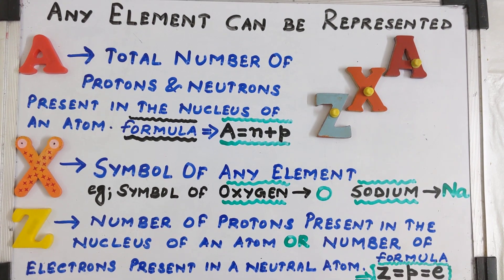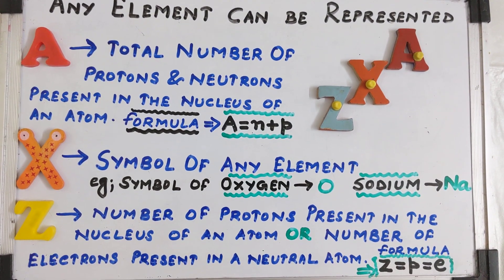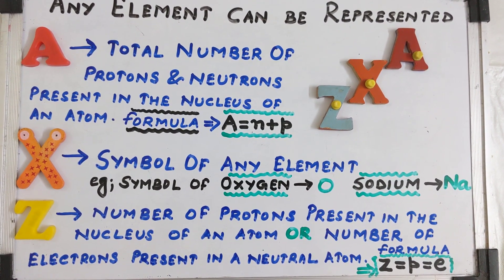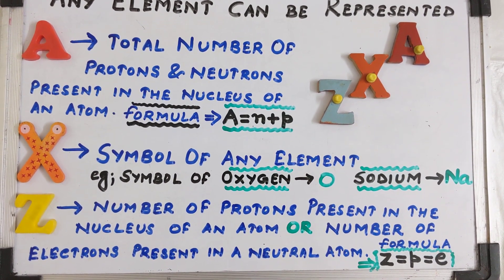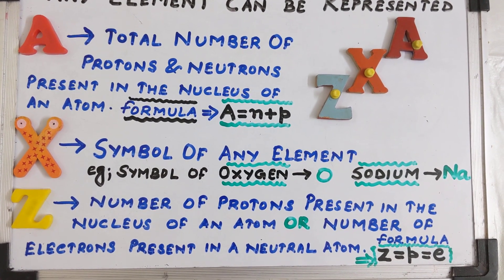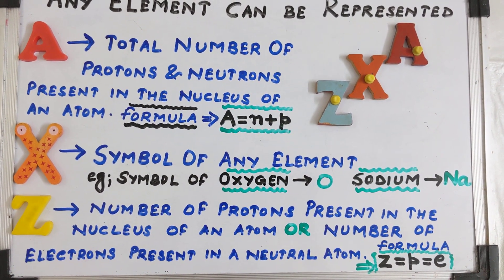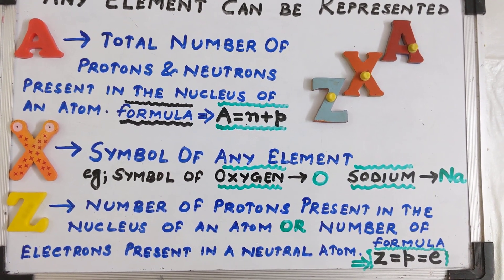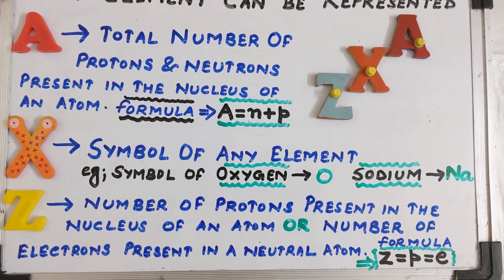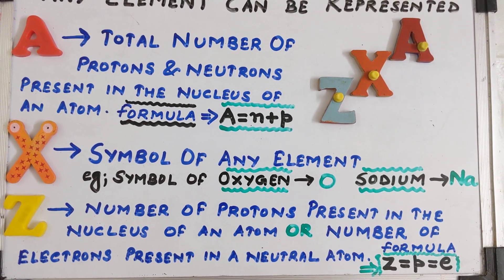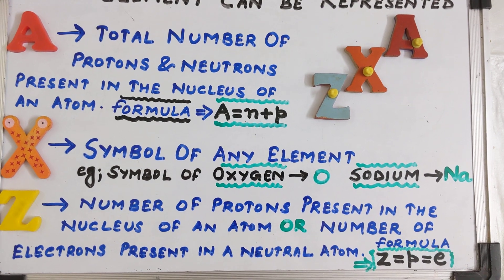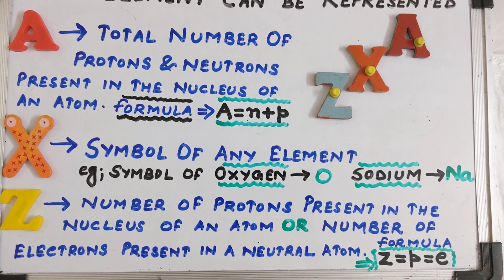Let us understand what the terms A, X, and Z stand for. A stands for the mass number of the element, defined as the total number of protons and neutrons present in the nucleus of an atom. It is represented by the symbol A, and its formula is A = N + P. X stands for the symbol of any element — for example, the symbol of oxygen is O and of sodium is Na.